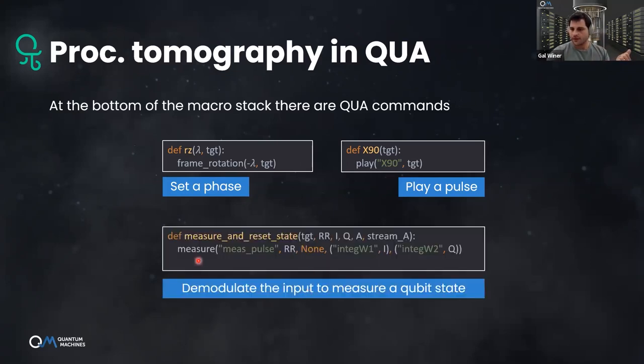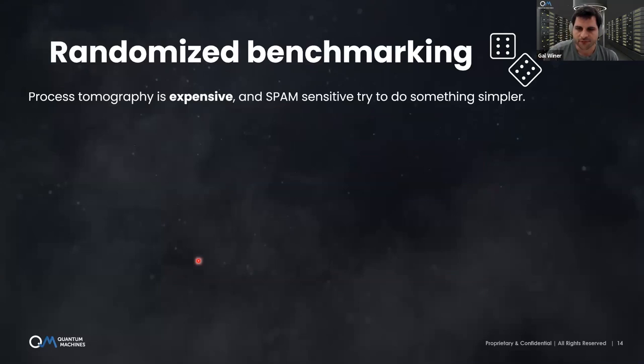If you go down the rabbit hole of all these macros, you end up seeing some real QUA commands. Here you see a macro that sets the phase of the pulses that you play, and this frame rotation is not a macro, it's an actual QUA command. Here you see a pulse being played, a π pulse played to some qubit. These QUA commands are translated into instructions that are understood by our pulse processor, the core of our computation. Similarly, this is a measurement.